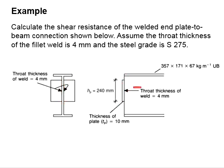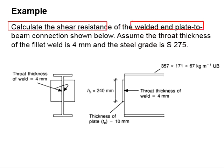The thickness of the throat is 4 mm. Assuming the steel grade is S275, you are asked to calculate the shear resistance of the welded end plate-to-beam connection. You may pause the video for a while for you to work out the solution.